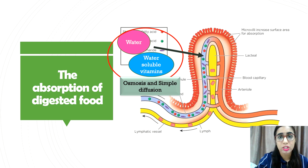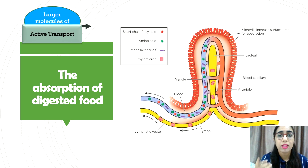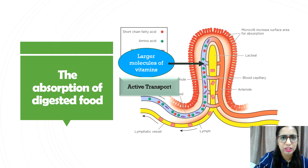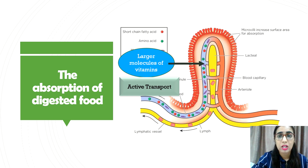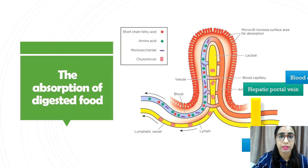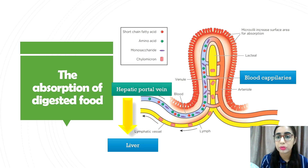Water-soluble vitamins such as vitamin B and C diffuse through simple diffusion from the lumen to the epithelial cells and then into the capillaries. Larger molecules such as vitamin B12 are absorbed by active transport into the epithelial cells and then into the blood capillaries. All the nutrients — amino acids, simple sugars, water, and vitamins — are transported from the blood capillaries to the liver through the hepatic portal vein.